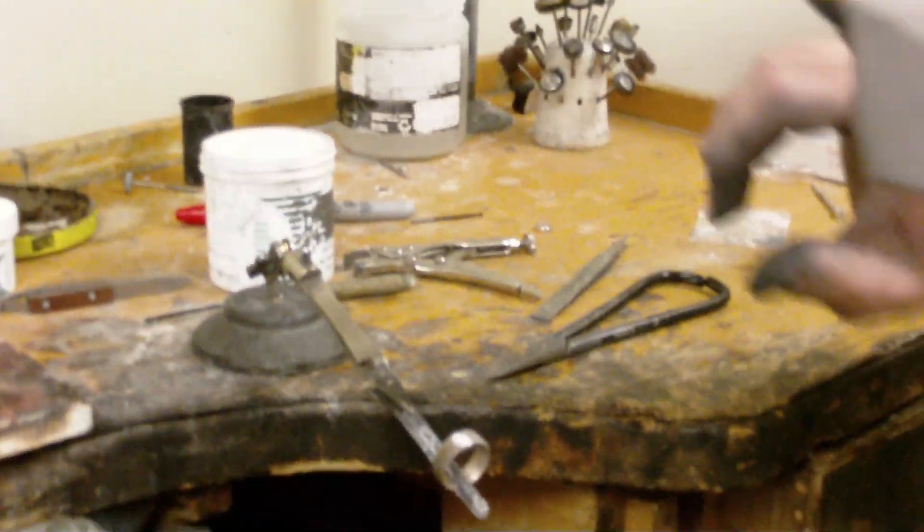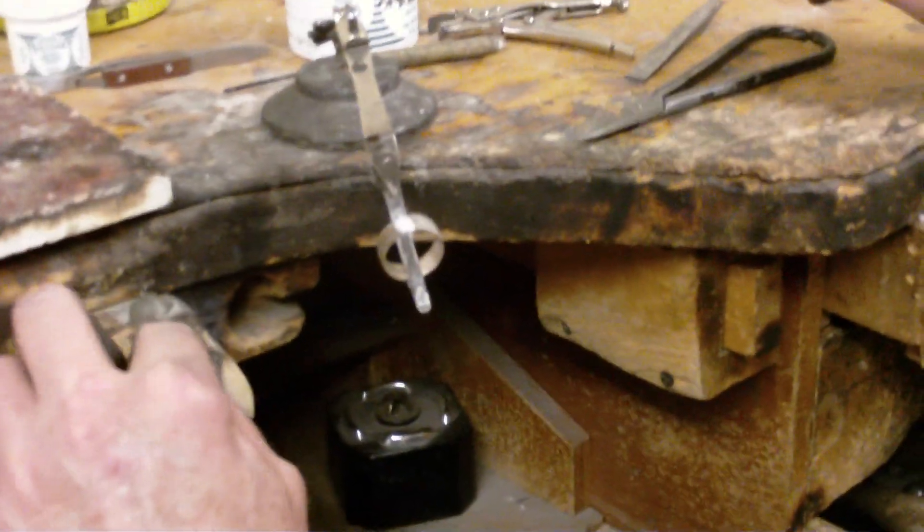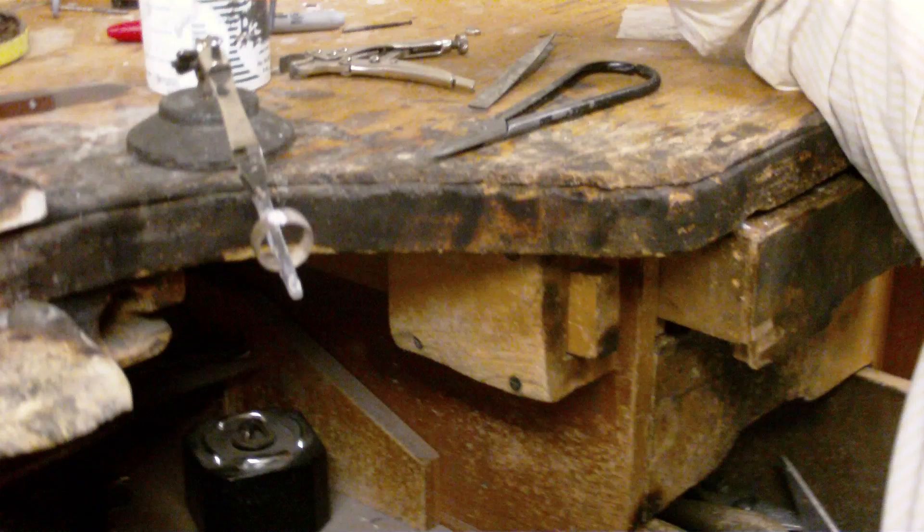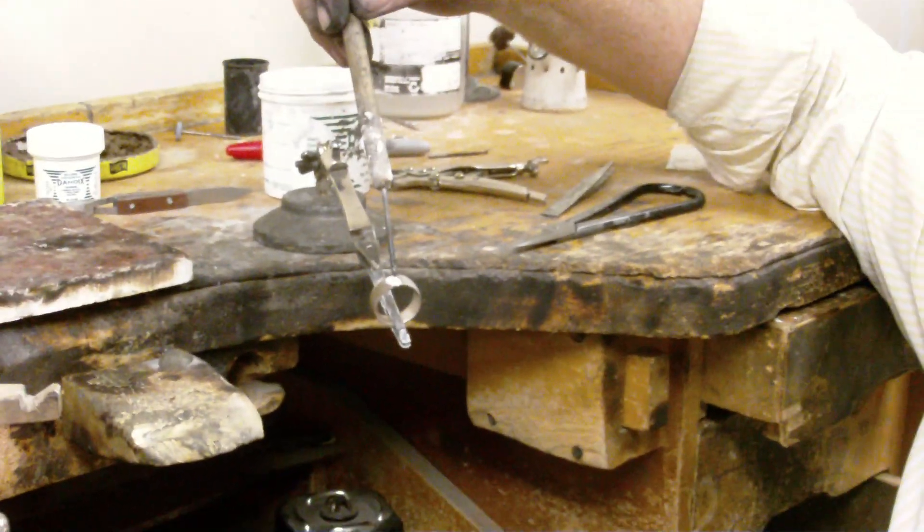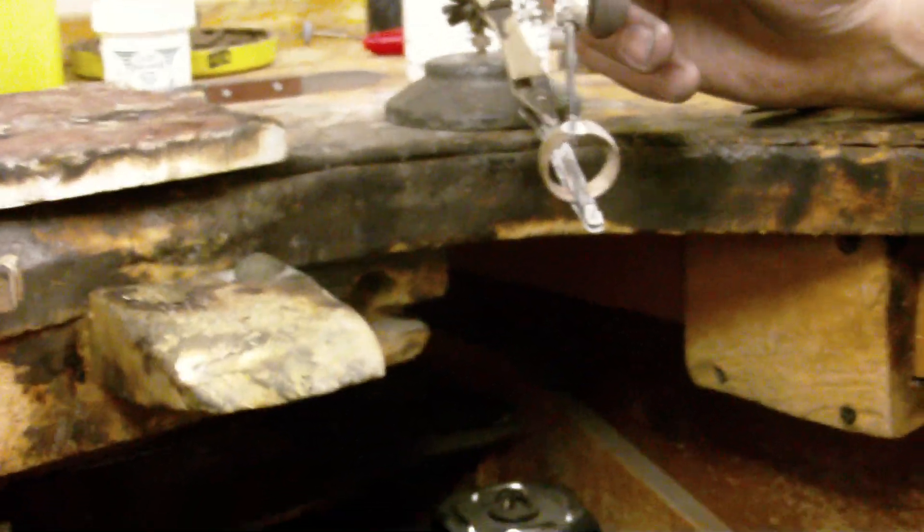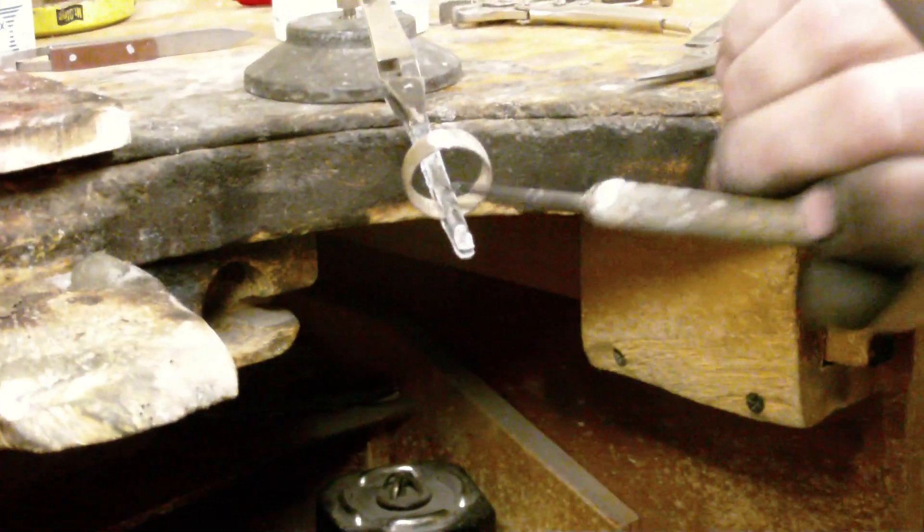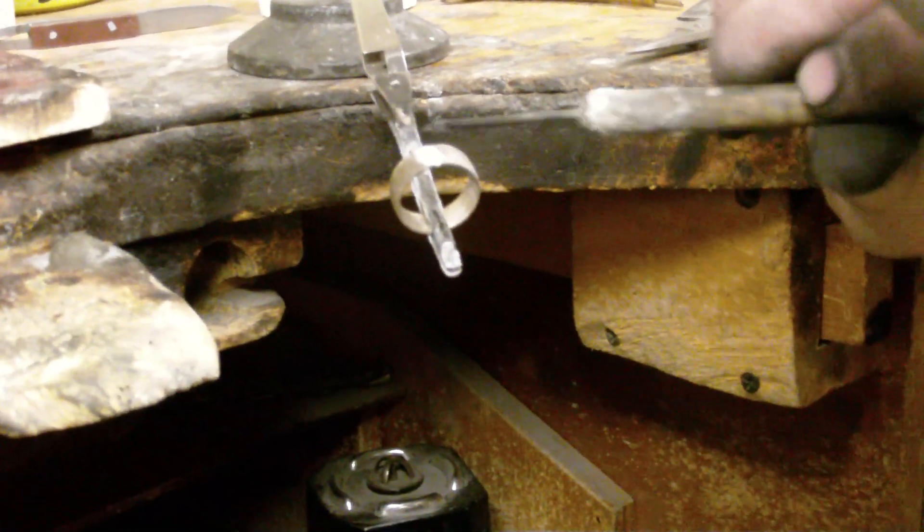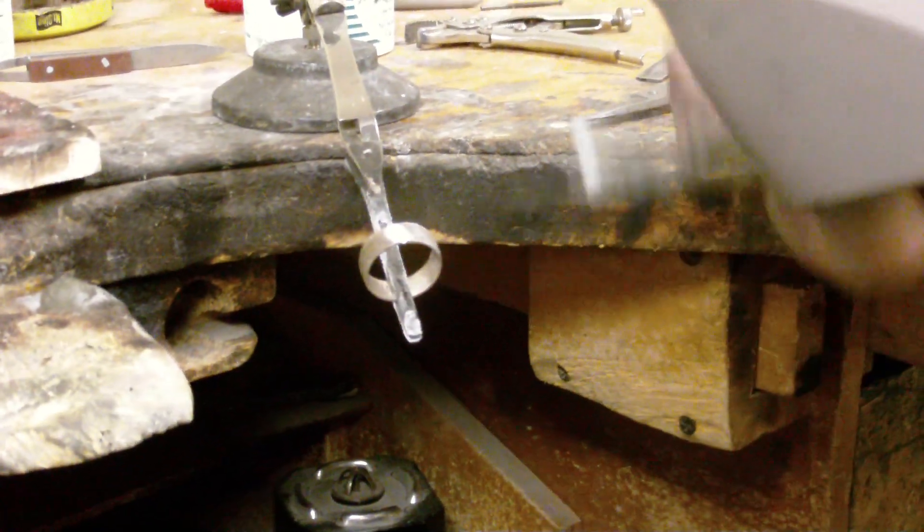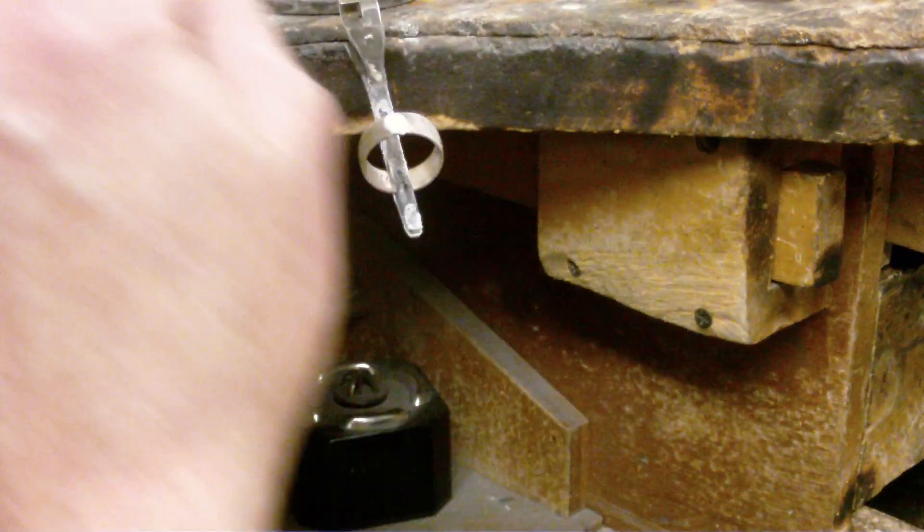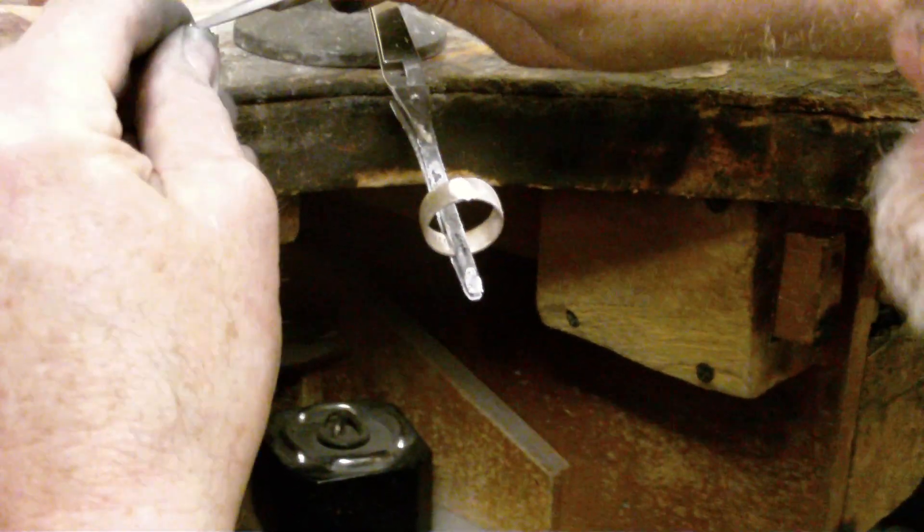Because sterling silver transfers heat so fast, you have to understand thermal transfer, thermal energy. You have two opposing forces here. Heat is going to flow to the coldest point. Your solder is going to flow to the hottest point. So if I want to solder right here, and I put my torch right here, because heat flows to the coldest point, the coldest point is down here. So if I'm heating this area and my heat is going down here, I have zero control over this area right here. So what I want to do, I'm going to cut a piece of my solder.